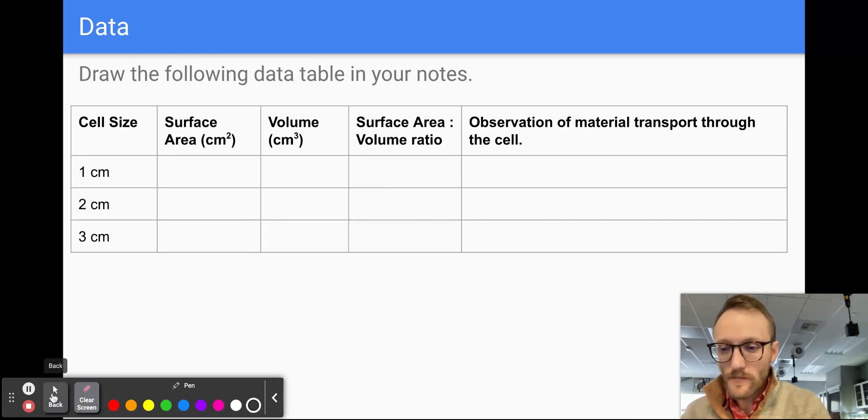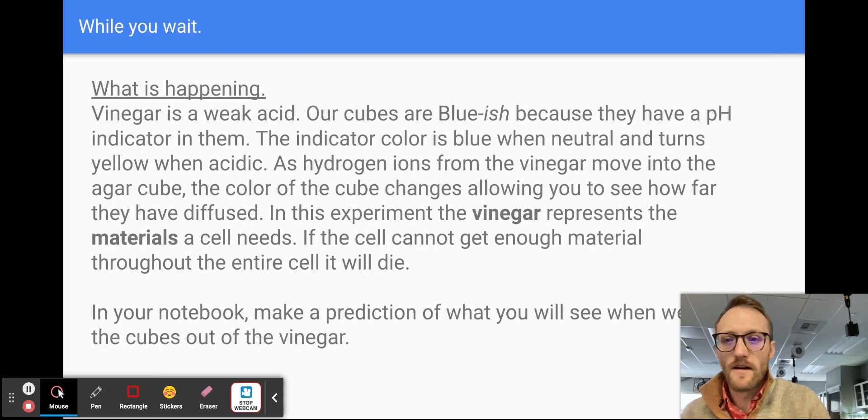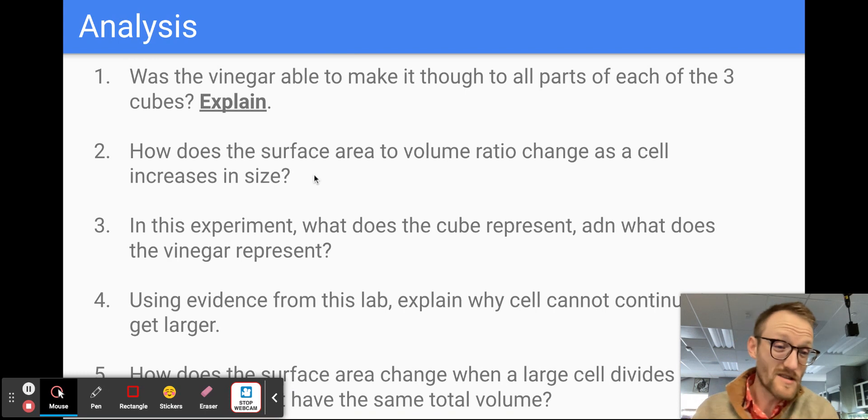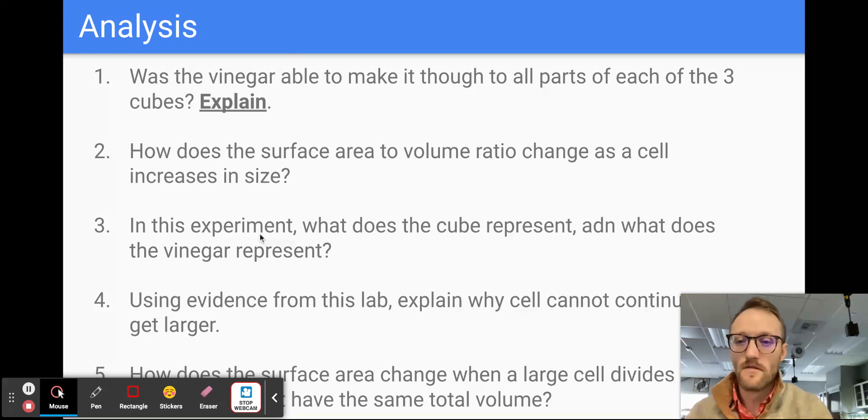So now let's look back at our analysis questions. So basically we should have done all of these. Was the vinegar able to make it through all parts of the cube? No, it wasn't. So tell me, what did you see? Now, this is the second one. Does surface area to volume ratio change as the cell increases in size? That's what we just saw, right? So as the cell increases in size, our surface area to volume ratio goes down. So yes, it does change. It decreases as cell size increases. In this experiment, what did the cubes represent? And then what does the vinegar represent?